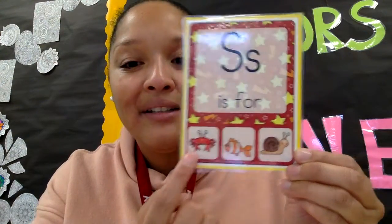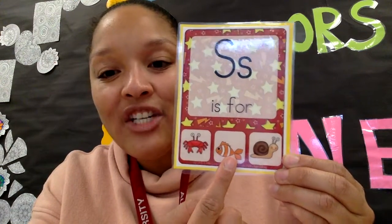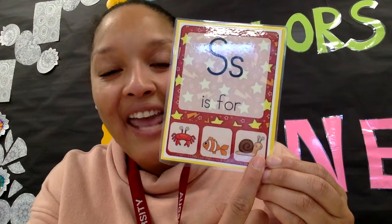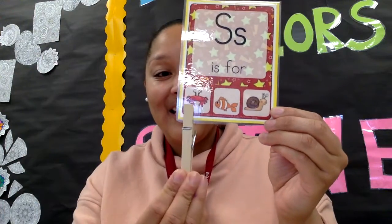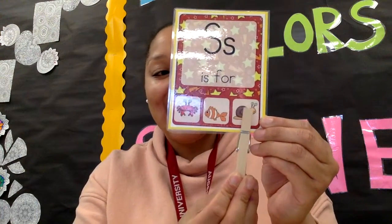Our next card is the letter S. This letter has the S sound. Which picture starts with the S sound? C, Crab? F, F, Fish? S, S, Snail. Which one starts with the S sound? We got it — S, S, Snail. Snail starts with the S sound.